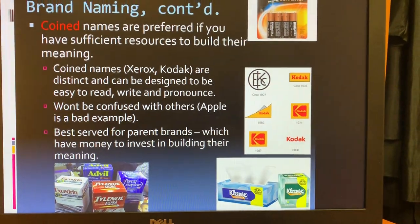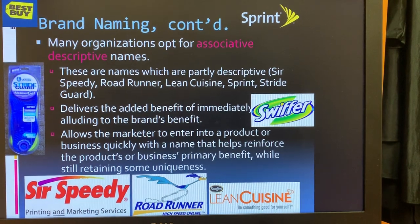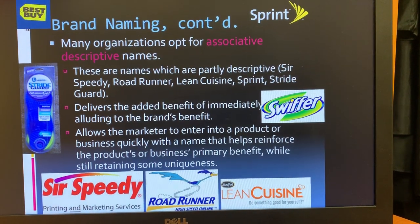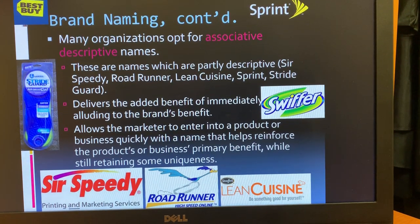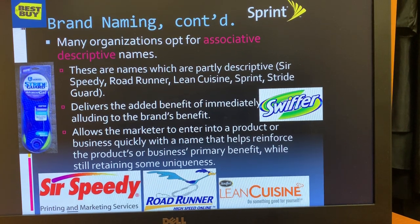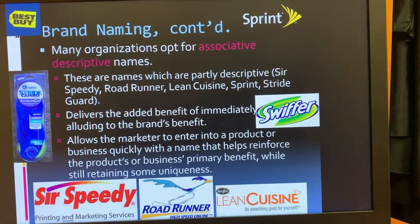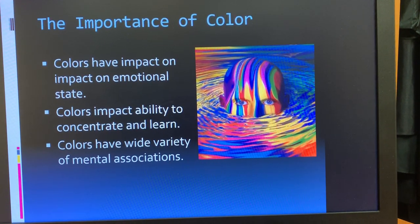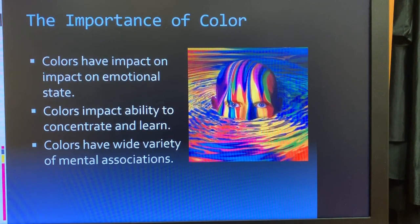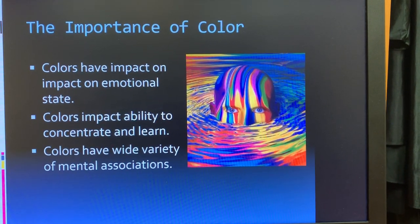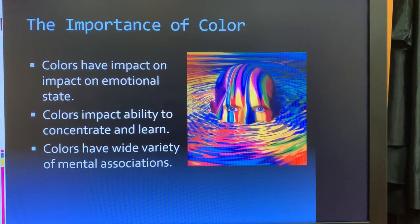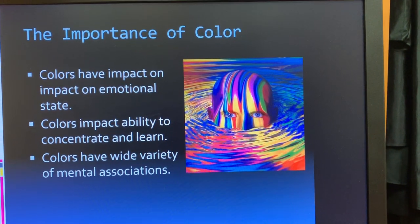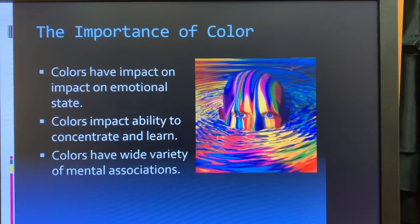On brand naming, coined brand names are made up, while descriptive brand names describe something about the brand — usually the benefit. Best Buy hints at being the best-priced option. Names like Swiffer, Sir Speedy, Roadrunner, and Sprint all suggest speed. We also talked about the emotional impact of color in logo design — colors can help us retain information, have a calming influence, and can even stimulate appetite, which is why fast food companies use warm colors like red, orange, and yellow. Color can have all types of emotional and mental impacts on consumers.